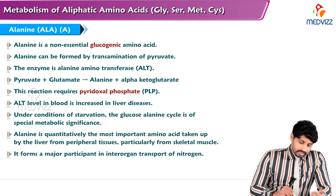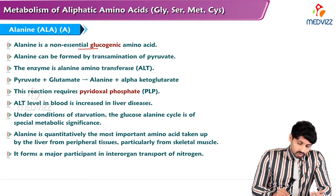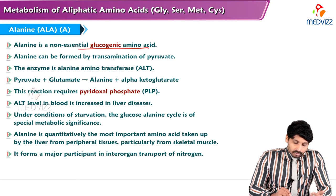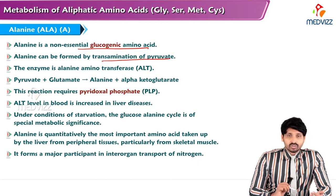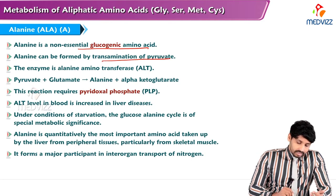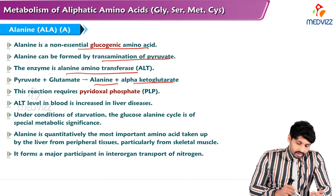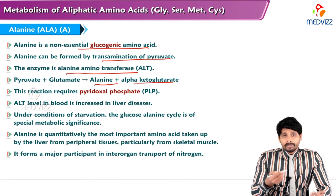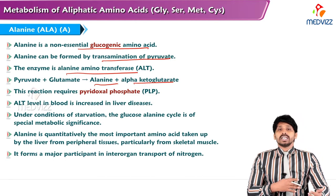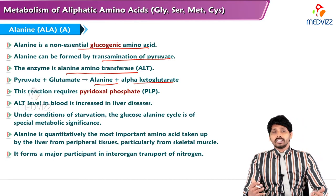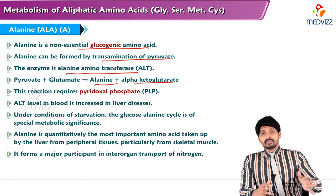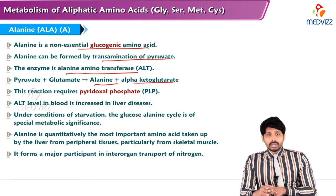The next amino acid is alanine. Alanine is a non-essential, glucogenic amino acid. It can be formed by transamination of pyruvate; the enzyme is alanine aminotransferase (ALT): pyruvate + glutamate → alanine + alpha-ketoglutarate. The reaction is PLP-dependent. ALT levels in blood increase in cases of liver disease, so it acts as a marker for liver health.